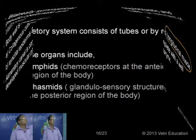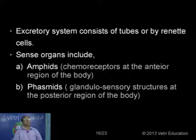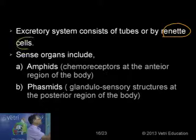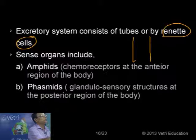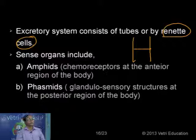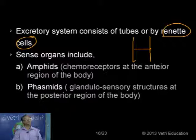The excretory system is performed by a system of tubes. In some cases we have what are called renette cells. The tube system is more or less in the form of H-shaped tubes, or the renette cells are found in a ladder arrangement. The excretory system is in the form of H-shaped structures — long tubes or specialized cells called renette cells, just like flame cells, responsible for excretion of waste materials.